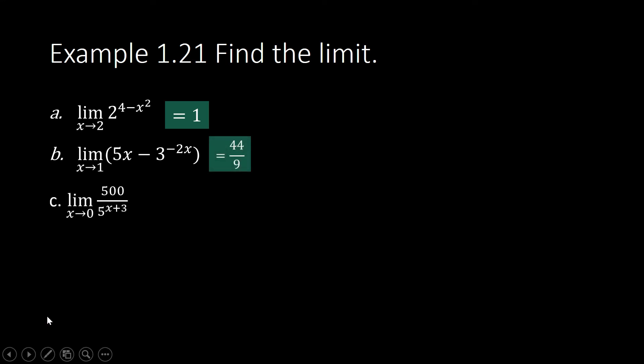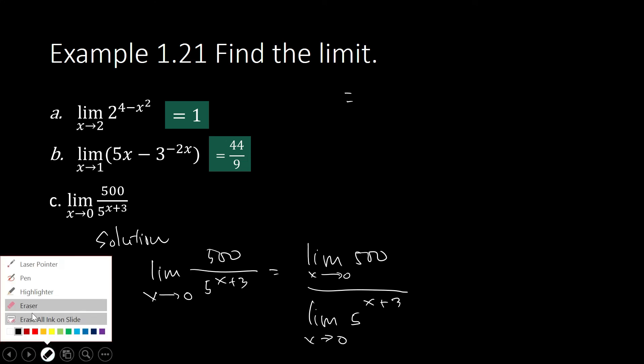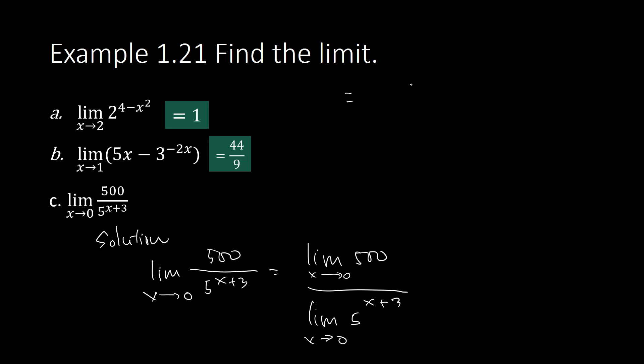What is the limit of 500 divided by 5 raised to x plus 3 as x approaches 0? The limit of a constant is equal to a constant. So the numerator is just 500. Our denominator is 5 raised to the limit of x plus 3 as x approaches 0. And this is equal to 500 divided by 5 raised to 0 plus 3.